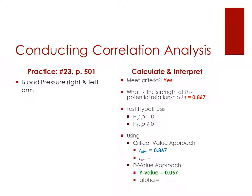So, in order to do this, let's go through and do our testing here. So we have our critical value. So we have our R obtained of 0.867. We have our P-value, if you go look at your StatsCrunch data, you have 0.057.